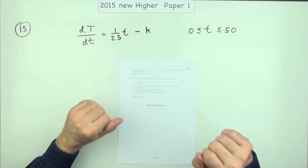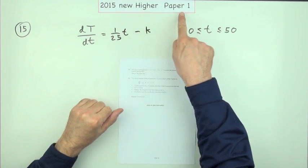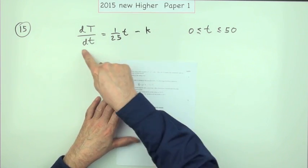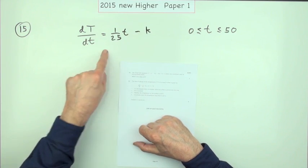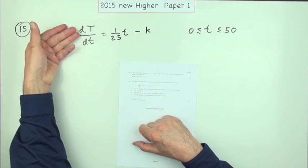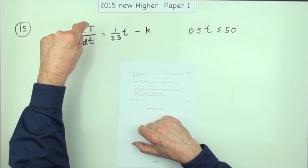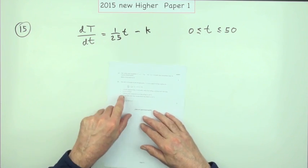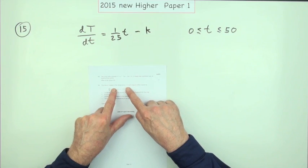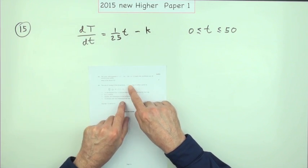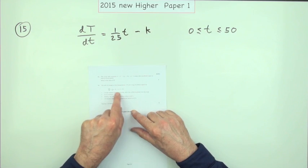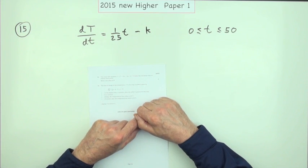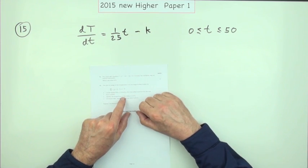Number 15, the last question in Paper 1 of the 2015 New Higher. Six marks. You've got a differential equation - in other words, you've got the derivative and you have to go back to the original equation, express T in terms of small t. What is this all meant to be about? The rate of change of temperature. The temperature of a mug of coffee is given by this expression, and t is within this range here. T is in minutes.